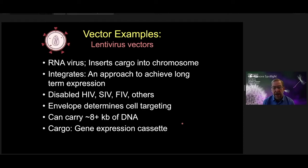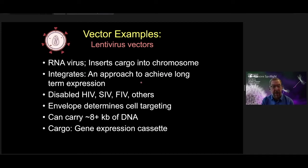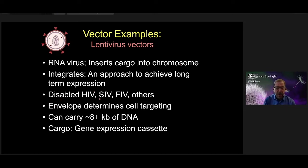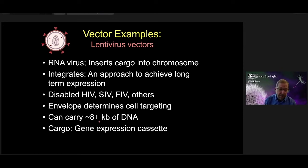Another type of vector is lentivirus. These are RNA viruses that convert their RNA genome into a duplex DNA genome that inserts itself into the host chromosome — what we call integration — to achieve long-term gene expression. These vectors are used in clinical studies for immunodeficiencies and in CAR-T therapy. They're generally made from a disabled human immunodeficiency virus. Lentivirus vectors have a larger carrying capacity of eight or more kilobases of DNA and are typically used to carry a gene expression cassette.